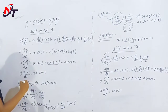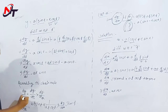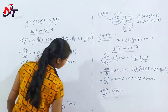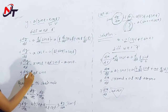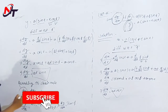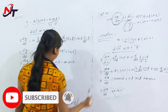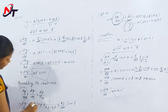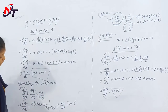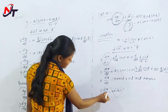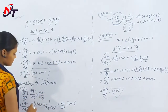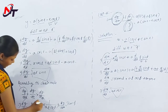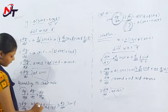According to the chain rule formula: dy/dx is equal to dy/dt into dt/dx. dy/dt is at sin t, and dt/dx is 1 divided by dx/dt, which is 1 by at cos t. So at cancels, and dy/dx equals sin t by cos t, which is tan t.